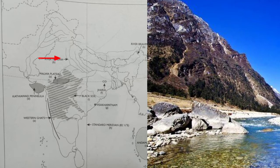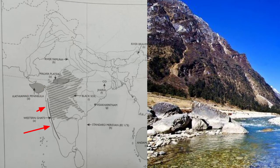Mark and name the Andaman Sea. Mark and name the Kathiawar Peninsula. Mark with a bold line and name the Western Ghats. Print 'C' over the place where the coal mine — mining station — is found, such as Jharia.